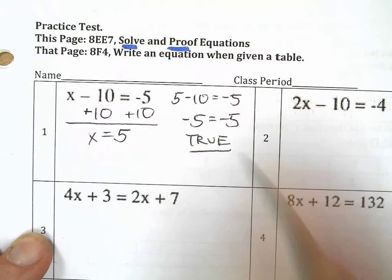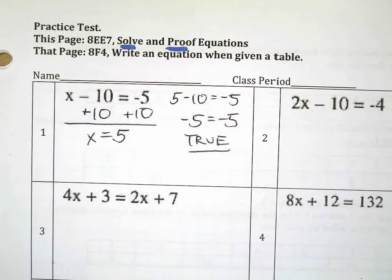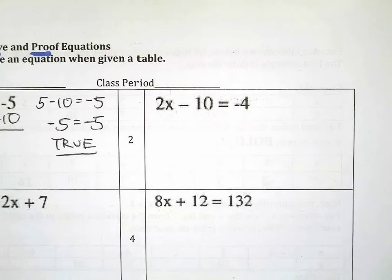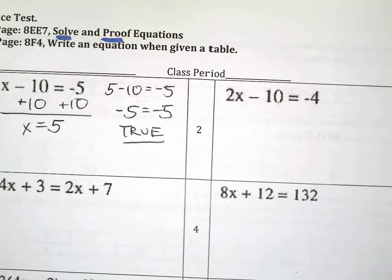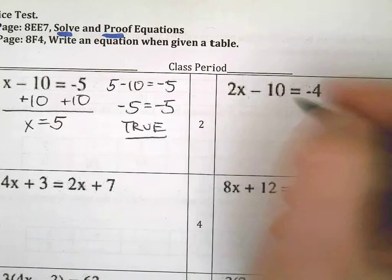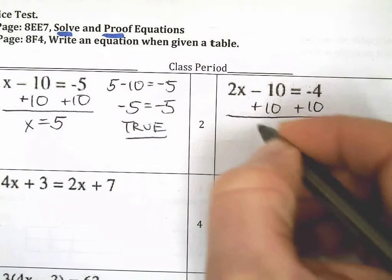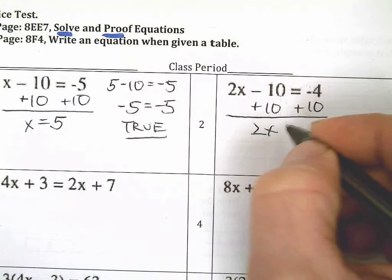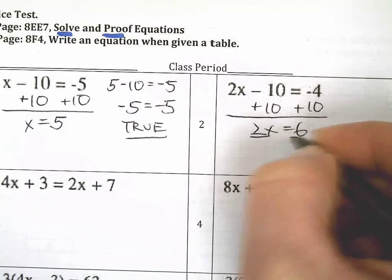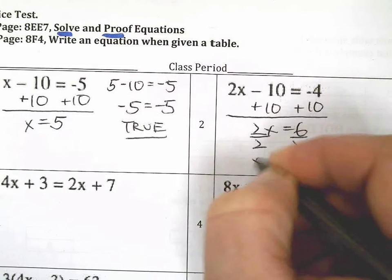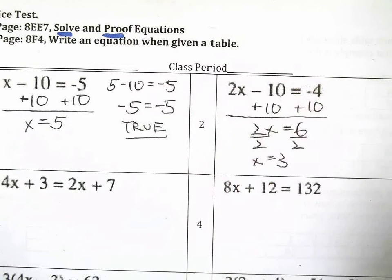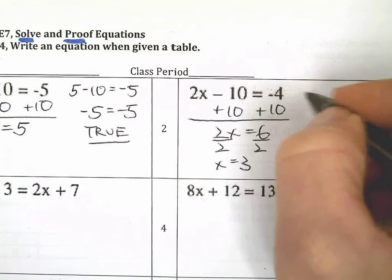Second one. I'm going to add 10 to both sides. Remember, both sides, both sides, both sides. 2x equals 6. Divide both sides by 2. x equals 3.